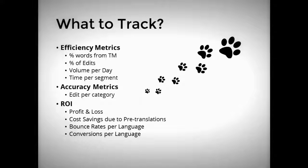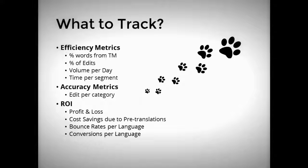For our organization, it's important to understand the efficiency of translation. Most of our translations have a translator and an editor working on them, and time is usually of the essence. Having a way to track efficiency lets us know if we have the right team members assigned, the right tools available, and the right circumstances for our translators to meet our SMART efficiency goals. One thing you could track is the percentage of words from your translation memory — which is tracked in your CAT tool.